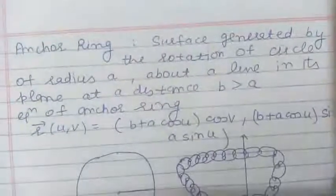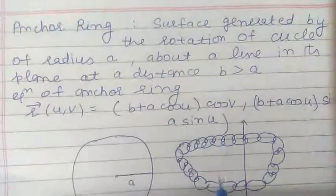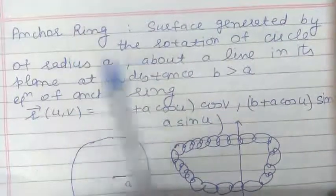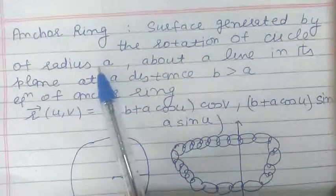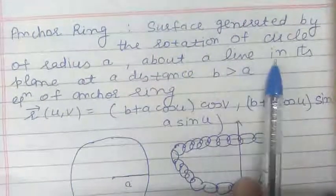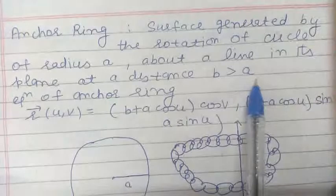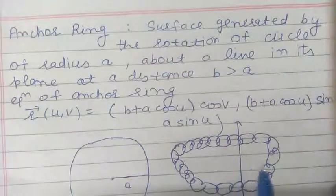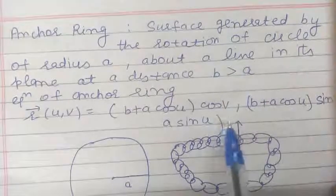Next, what is anchor ring? Anchor ring is the surface generated by the rotation of a circle of radius a about a line in its plane at a distance greater than the radius of the circle. So, the surface generated by the rotation of a circle about that line which is at a distance greater than the radius is called anchor ring.